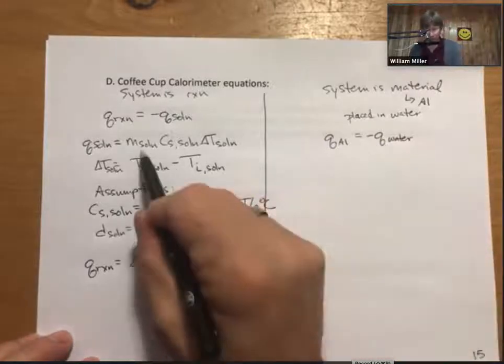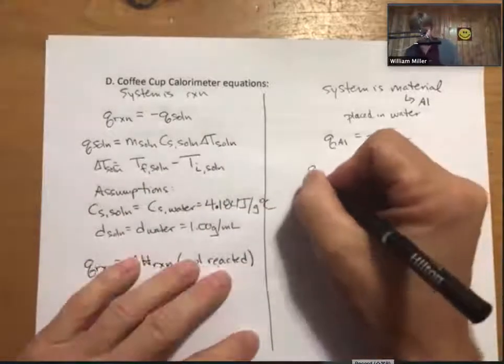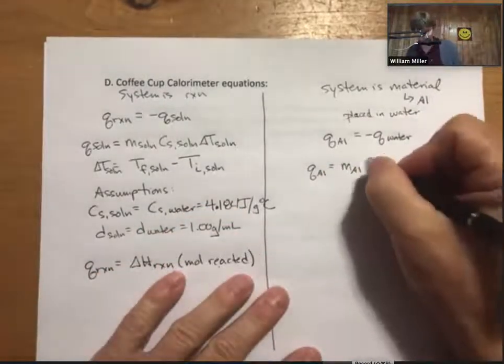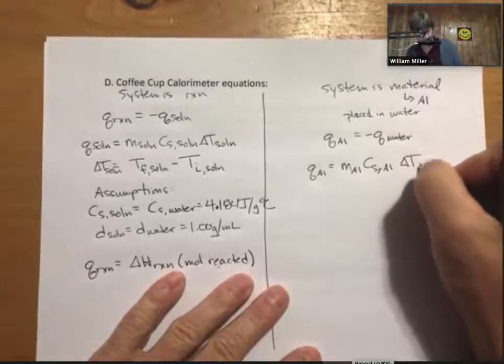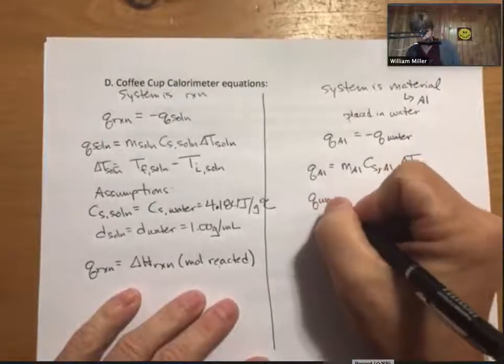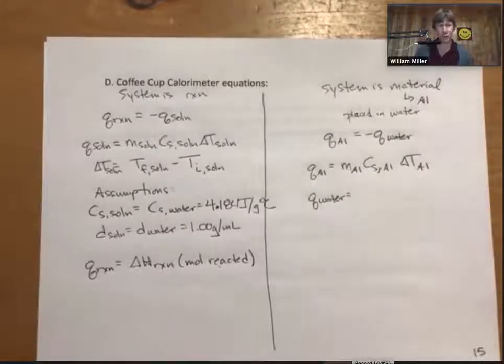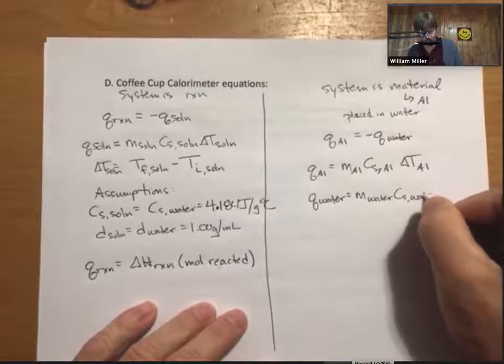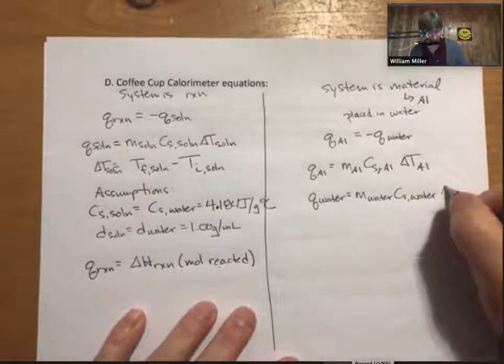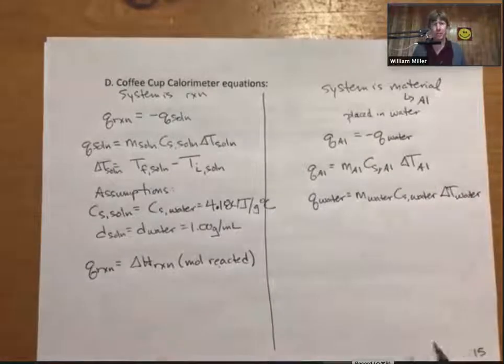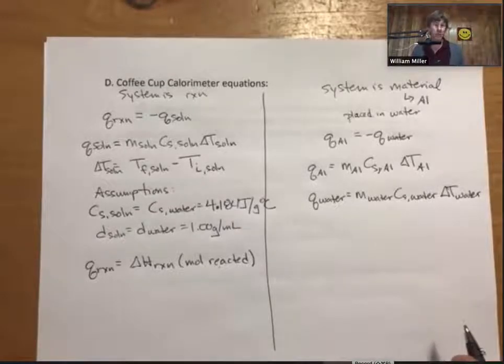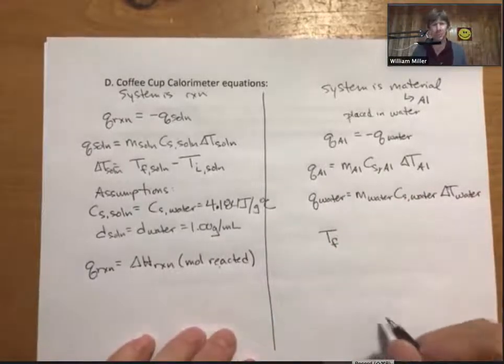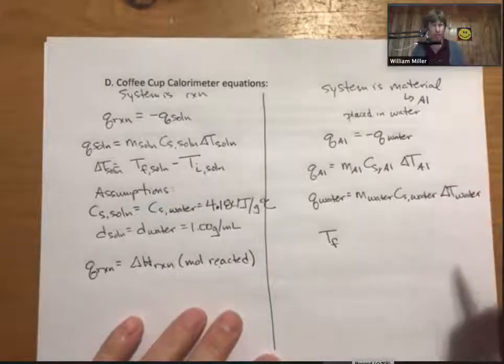They will both have identical terms to this solution part over here, meaning that Q aluminum equals the mass of the aluminum times the specific heat capacity of the aluminum times the temperature change of the aluminum. Q water equals the mass of the water times the specific heat capacity of the water times the temperature change of the water. And I think the one thing that comes up pretty frequently in these types of problems is that we're solving for t-final.